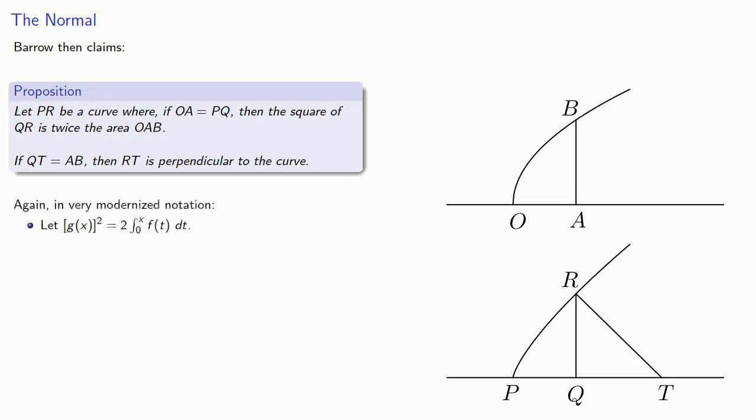Again, in very modernized notation, let the square of G of X be twice the definite integral of 0 to X of F of T dt. Then the normal to the curve Y equals G of X at X equal to A has slope negative G of A over F of A.